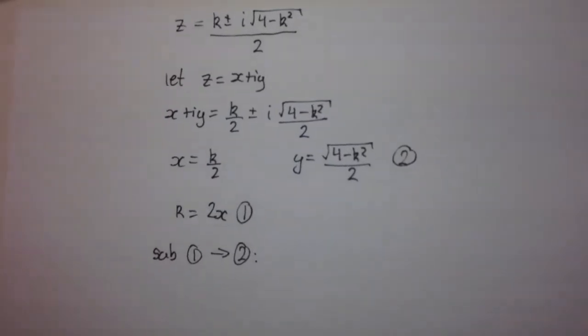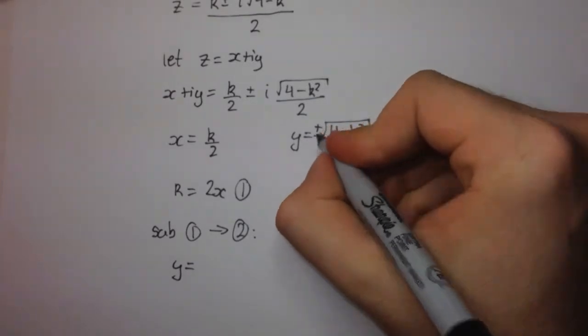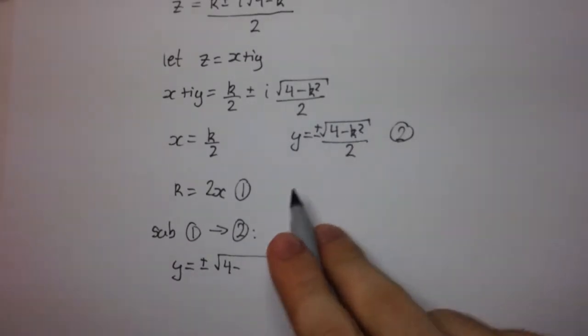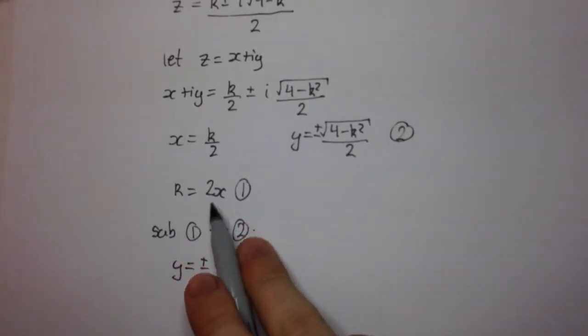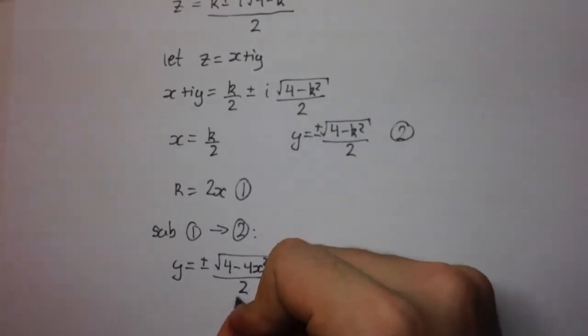And this is what we get. We're going to get y equals, that should be plus or minus, plus or minus the square root of 4 minus. Now, k squared will be squaring 2x. When we square 2x, we're going to get 4x squared. All over 2.